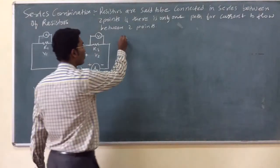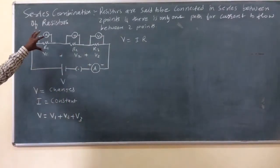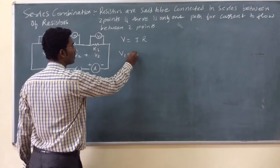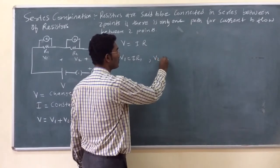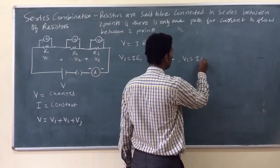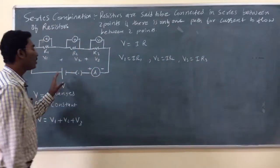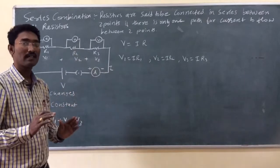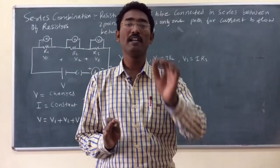Now, what is Ohm's law? According to Ohm's law, V is equal to IR. So applying Ohm's law to the three individual resistors: V1 is equal to IR1 for the first resistor, V2 is equal to IR2 for the second resistor, and V3 is equal to IR3 for the third resistor. Here we can see that I is the same in all three because the current flowing through the circuit is the same — there is only one path, the circuit is not branched. Therefore, current flowing through the circuit remains constant.